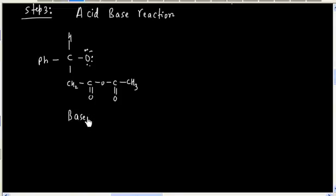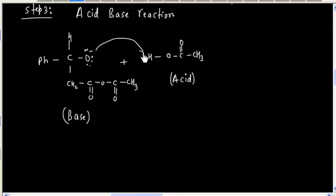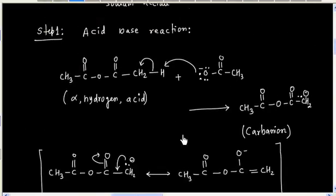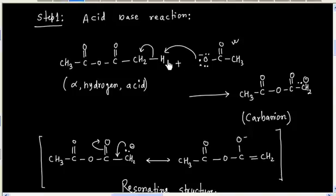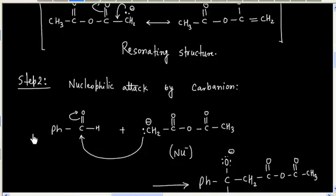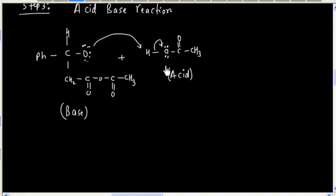This molecule will act as a base and it will abstract a proton from acid. In the first step, we have formed this acetic acid. When this takes a proton, we will have one molecule of acetic acid. Acetic acid and this acetate is coming from the first acetate.